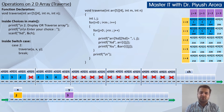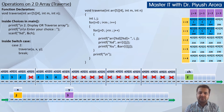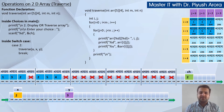Let us understand what happens when the user selects choice number two, that is, to perform traversal. Choice number two will be highlighted — 'enter your choice'. Using scanf, the user will input a choice, so choice number will be two. Case two calls the traverse function. Traverse means display. 'a' is the two-dimensional array that we passed, x is number of rows, and y is number of columns.